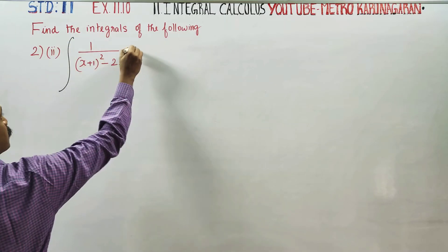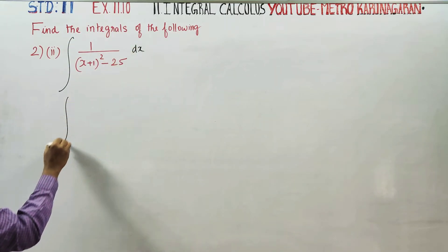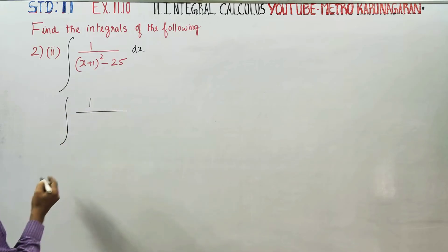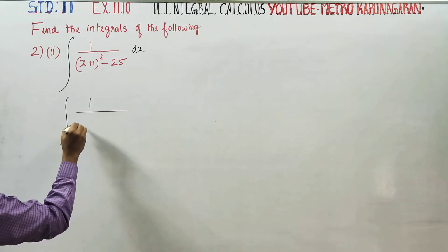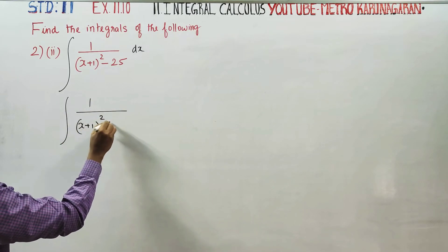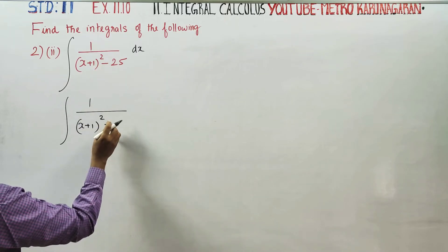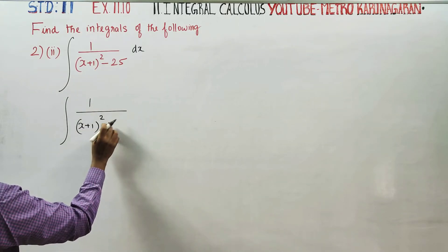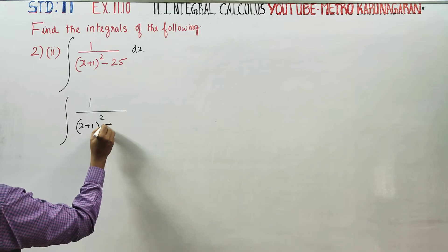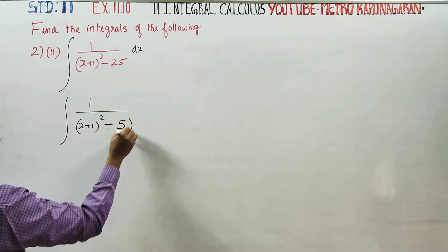Integration dx, integration of 1 by (x plus 1) whole square minus 25. This minus 25 can be written as minus 5 square.